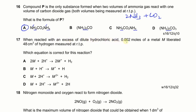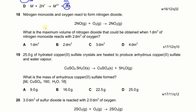Next: when reacted with excess dilute HCl, 0.002 moles of metal M liberated 48 cm³ of hydrogen. Which equation is correct? First, hydrogen is produced as H₂, not H, so options B and D are eliminated. The moles of H₂ = 48 ÷ 24,000 = 0.002 moles. Since moles of M equals moles of H₂ (both 0.002), the ratio is 1:1. Option A shows 2 moles M giving 1 mole H₂ — wrong. Option C shows 1 mole M giving 1 mole H₂ — correct.